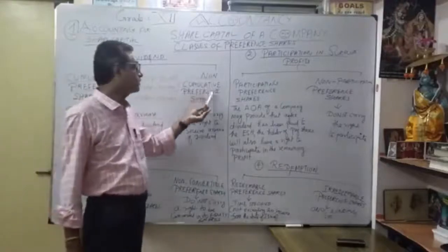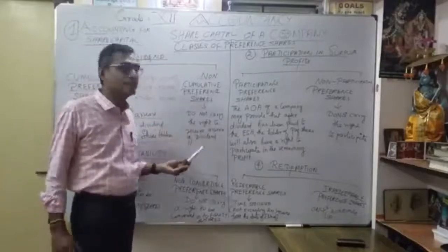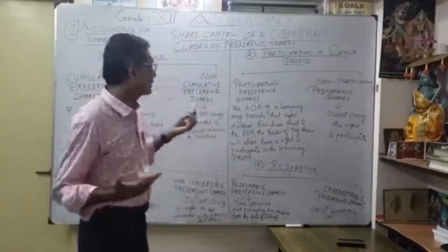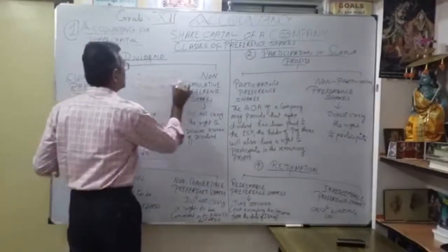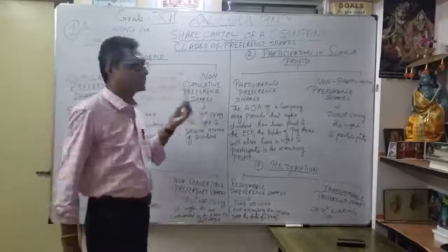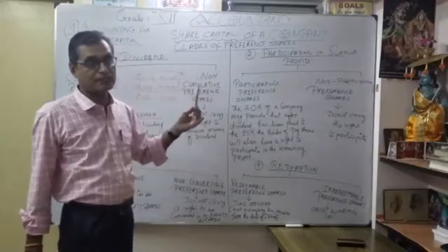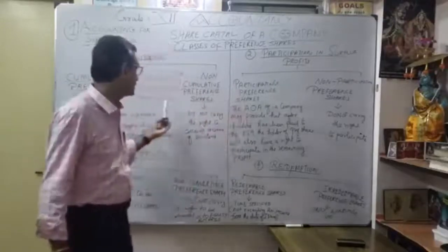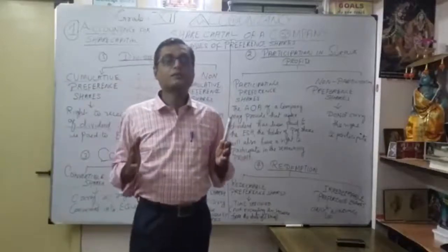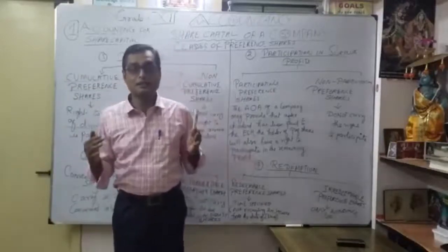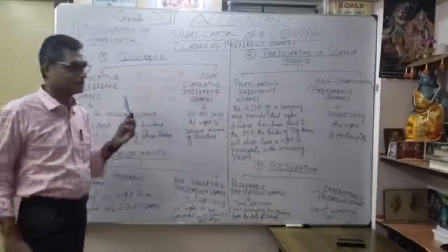Non-cumulative preference shares do not carry the right to receive any arrears of dividend. So if they couldn't get dividend for the previous two years (2018 and 2019), they will get only the current year's 50,000. They cannot claim the arrears. That's the difference between cumulative and non-cumulative preference shares under the dividend point of view.